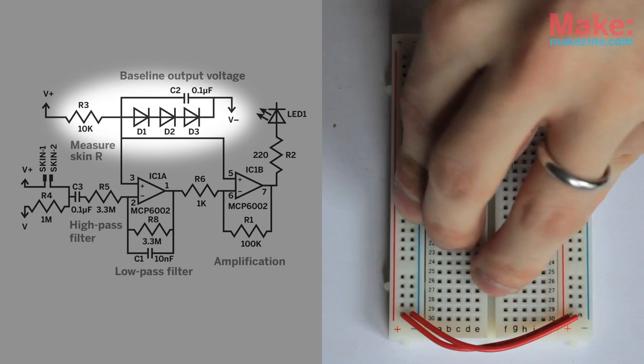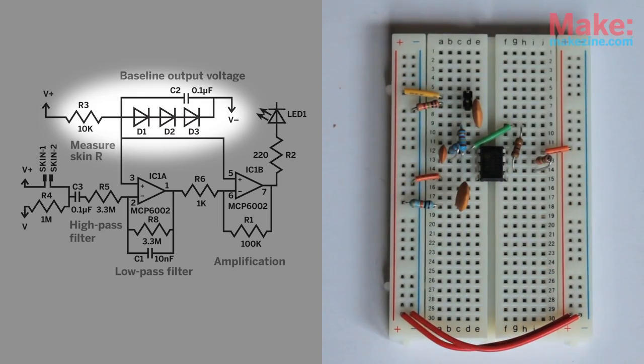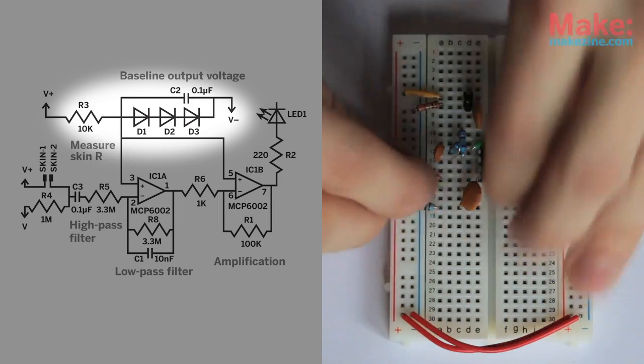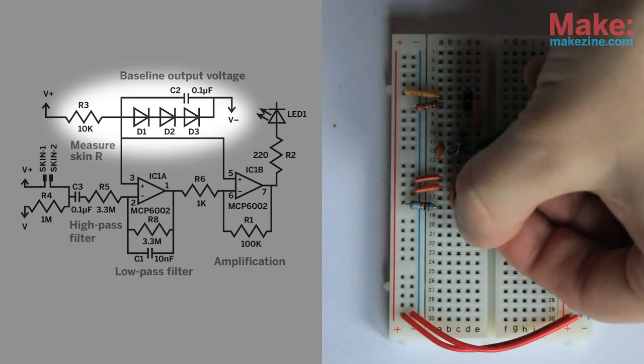A resistor, a capacitor, and a series of diodes sets the op-amps input to around 1.6 volts, which is just below the threshold needed to light the LED.